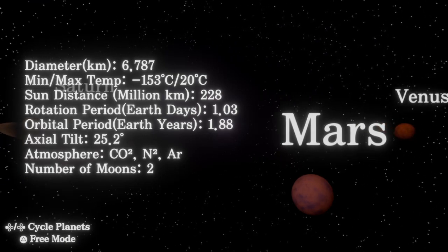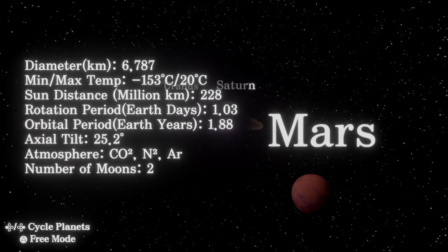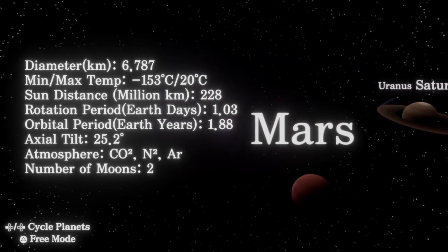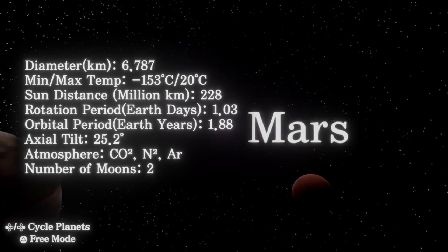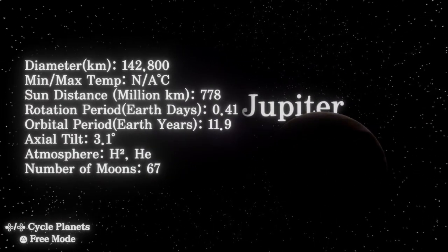Mars: the abundance of iron oxide on its surface gives Mars its reddish color. It has two small, potato-shaped moons called Phobos and Deimos.